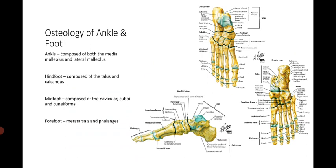For the osteology of the ankle and foot: the ankle is composed of the medial malleolus from the distal tibial plafond and the lateral malleolus from the distal fibula. The foot is subdivided into three parts: the hindfoot, composed of the talus and calcaneus; the midfoot, composed of the navicular, cuboid, and cuneiforms; and the forefoot, which is analogous to the metacarpals and phalanges of the hand.